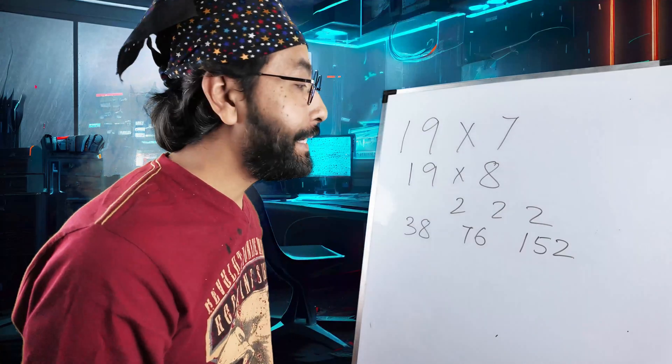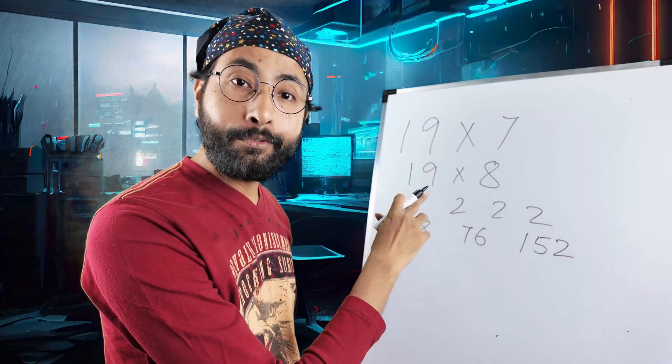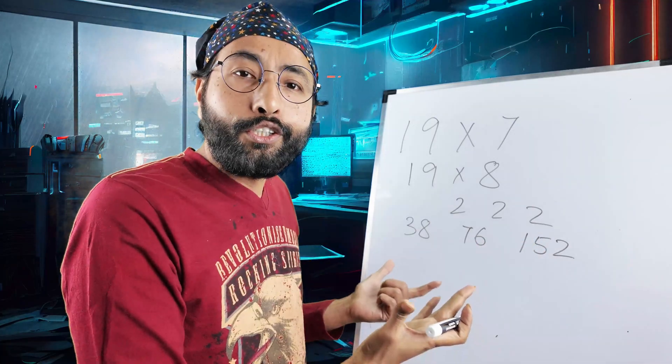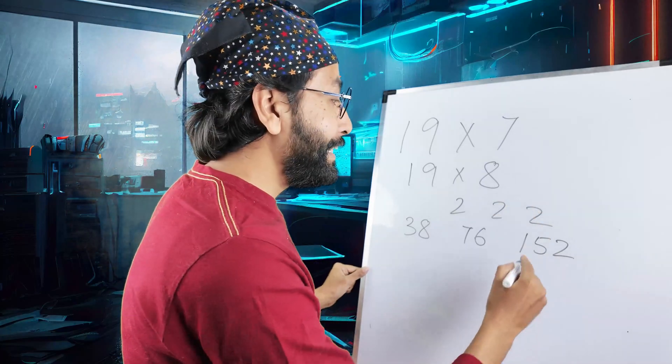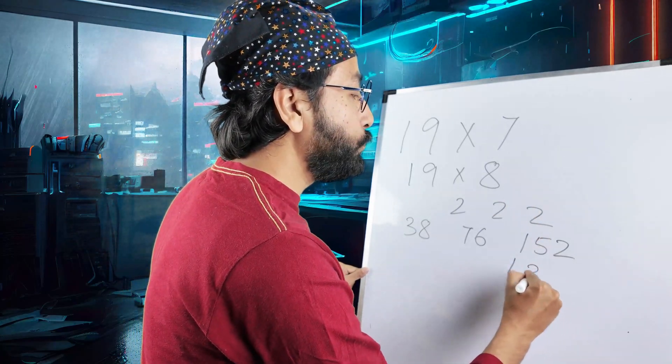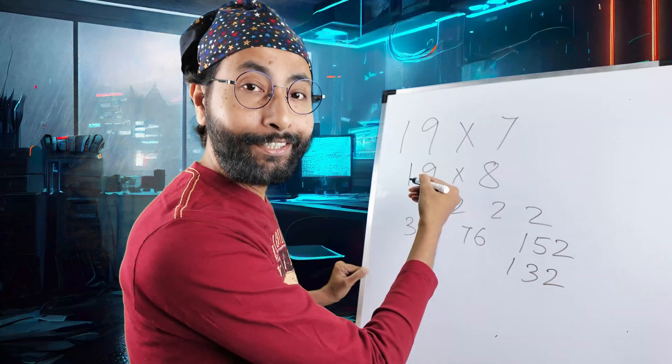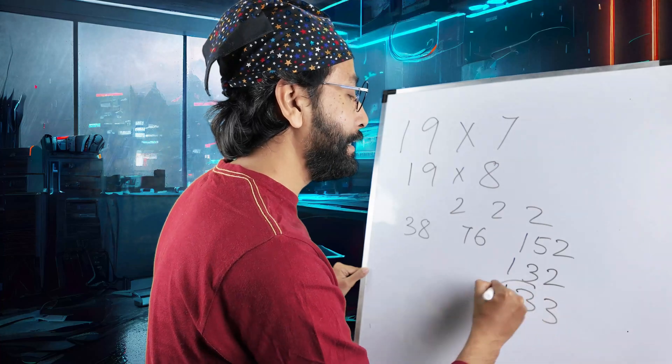But we have taken 1 extra 19, right? That has to be subtracted. How? 152 minus 19. We'll not subtract 19, we'll just subtract 20. That means 132 and add 1, because we have subtracted 20. Just add 1. That is 133. And this is your answer.